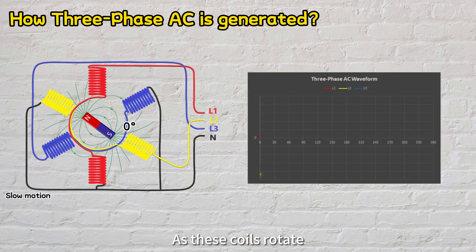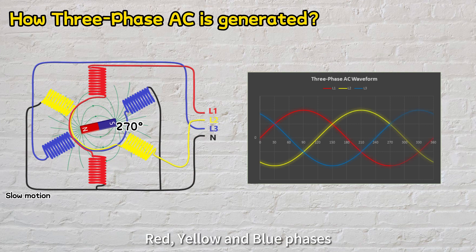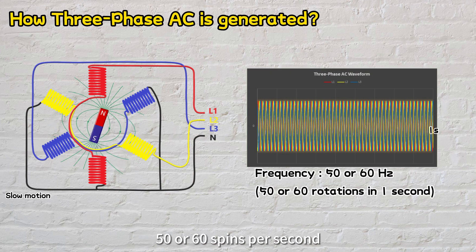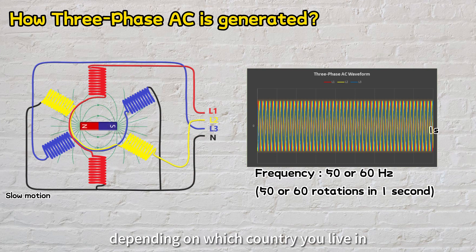As these coils rotate, they generate three phase AC waveforms. We call each of them red, yellow, and blue phase. Similar to single phase, the generator needs to complete 50 or 60 spins per second to generate 50 or 60 Hz electricity, depending on which country you live in.